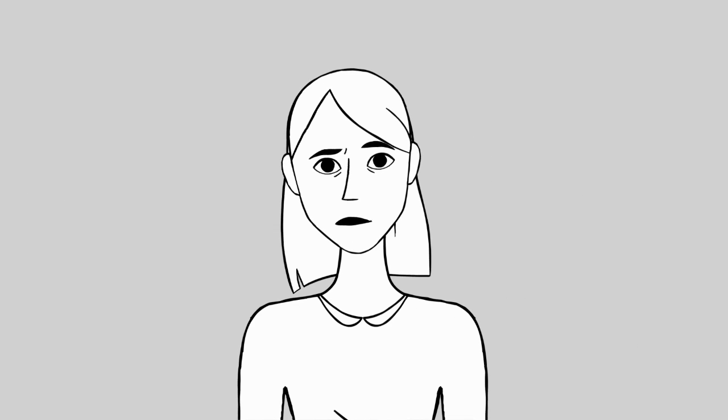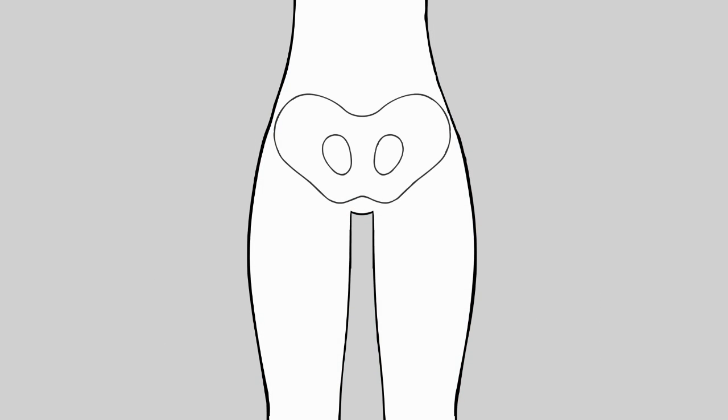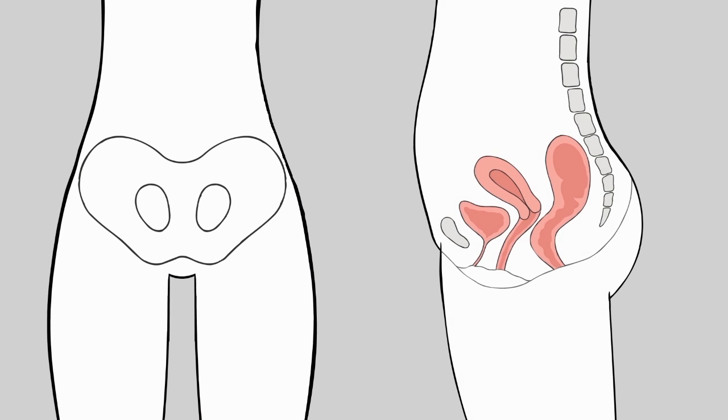The pelvic floor is a key set of deep muscles situated in the pelvis. They run from the frontal pubic bone to the tailbone, the coccyx, just below the base of the spine.